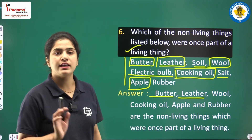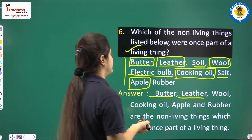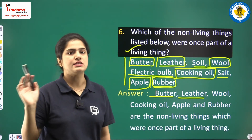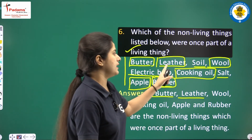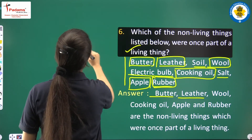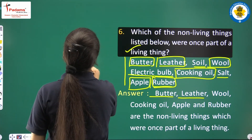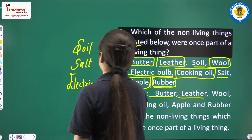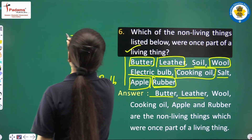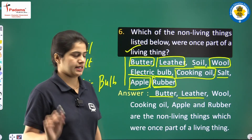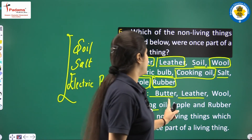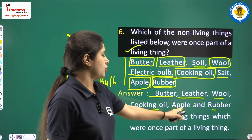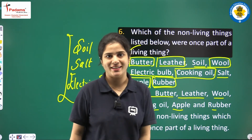So the three things that were never part of a living thing are: soil, salt, and electric bulb. Apart from these three, everything else — cooking oil, butter, leather, wool, apple, and rubber — are non-living things that were once part of a living thing.